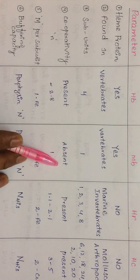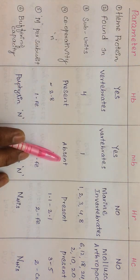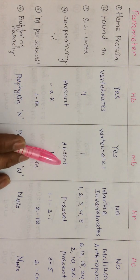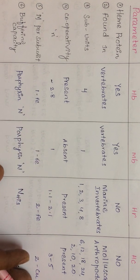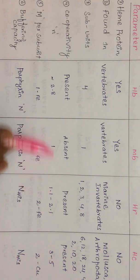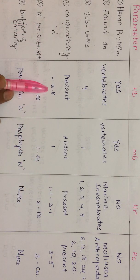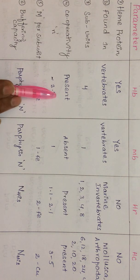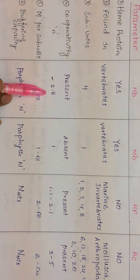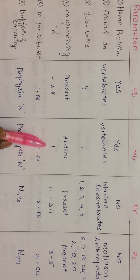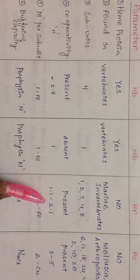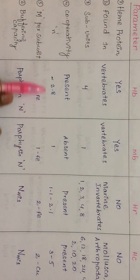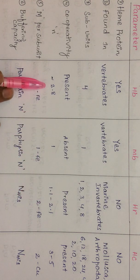Regarding cooperativity: hemoglobin shows cooperativity. Myoglobin, being a single unit, does not show cooperativity, and its Hill constant is one. For hemoglobin, the Hill constant is about 2.8, indicating positive cooperativity. Hemerythrin and hemocyanin also have cooperativity, but hemerythrin's cooperativity is comparatively lesser than hemoglobin's.